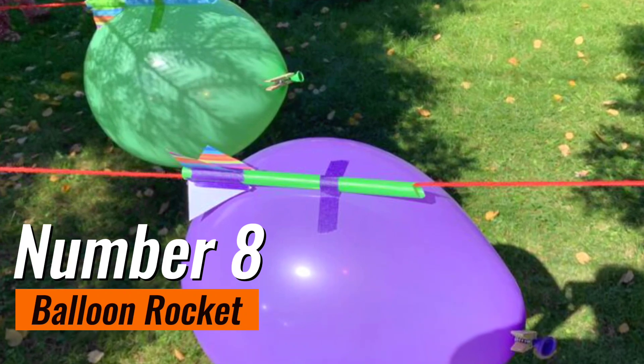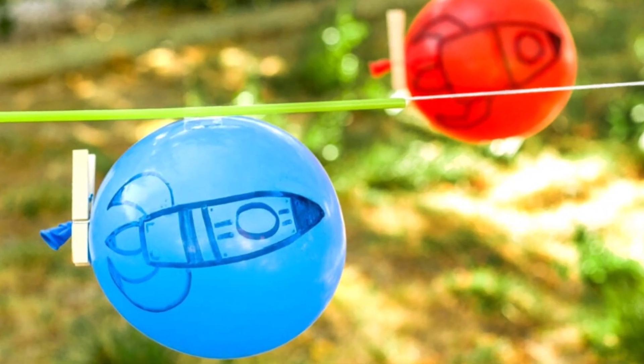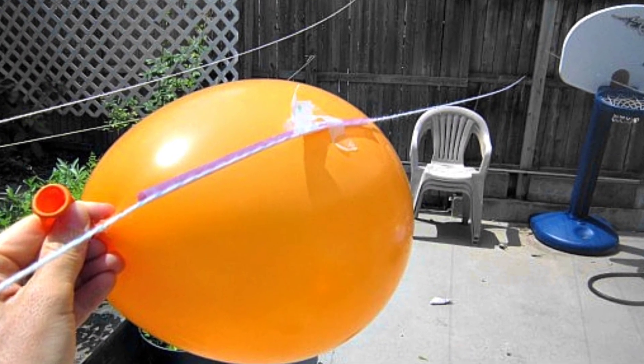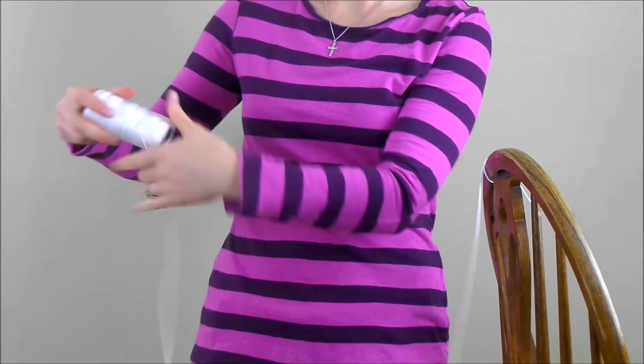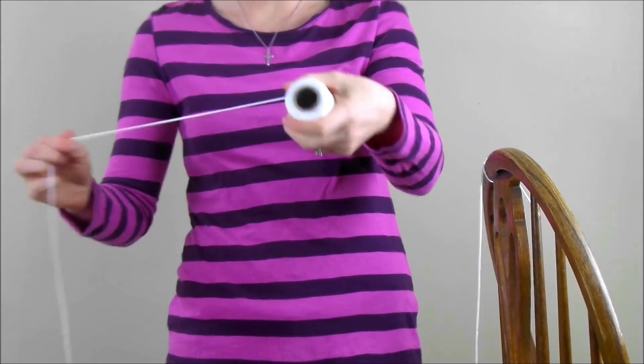Number 8. Balloon Rocket. The balloon rocket experiment is a thrilling and hands-on science activity that demonstrates the principles of thrust and propulsion. To set up this experiment, you will need a long piece of string or yarn, two chairs, a drinking straw, tape, and a balloon.